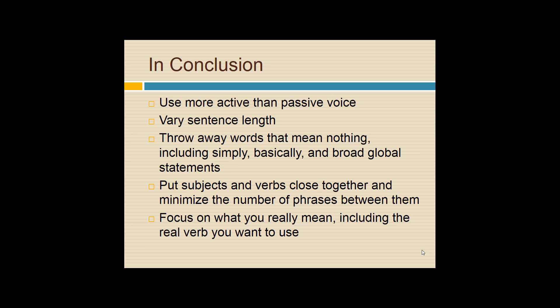In conclusion: use more active than passive voice — mix it up, but minimize passive. Vary your sentence length — don't use all very short sentences, but avoid sentences over 30 words with three or four commas. Throw away words that mean nothing — 'simply,' 'basically,' and broad global statements like 'in the world today.' If you find yourself typing that, you're probably not adding useful content for your audience. Put subjects and verbs close together and minimize phrases between them. Consider moving parenthetical phrases to the beginning or end of a sentence so they don't interrupt. Focus on what you really mean — on the subject and verb you really want to use. These are ways to tighten your writing.